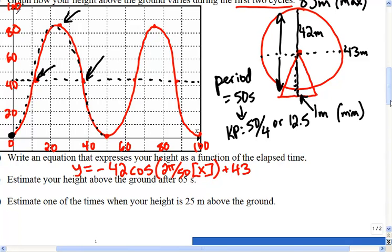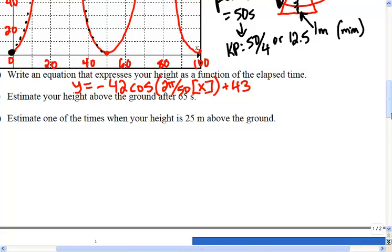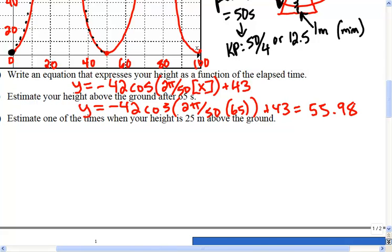Okay. So if you wanted to estimate our height, we now have a model for that graph. So all we have to do is substitute in 65 seconds, and it will tell us whereabouts we'd be located. So into my TI-83, I can put in negative 42 cosine of 2 pi over 50 times 65 plus 43. And I think if I remember, is it around 55 meters or so? 56 meters. Yeah, I think it's 55.98.